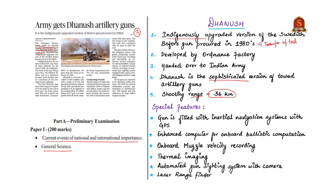Let us see some of the special features of Dhanush artillery guns. This gun is fitted with an inertial navigation system with GPS to locate a mobile target and hit with precision. It has an enhanced computer for onboard ballistic computation to compute the trajectory of the gun. It also has an onboard muzzle velocity recorder — muzzle velocity being the velocity with which a bullet leaves the muzzle of the gun. The gun also has thermal imaging, which is a commonly used night vision technology that improves visibility of objects in a dark environment by detecting their infrared radiation and creating an image based on that information.